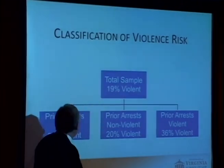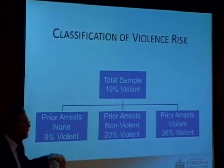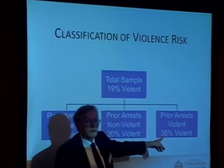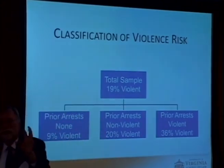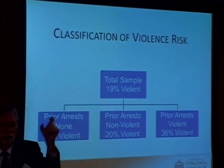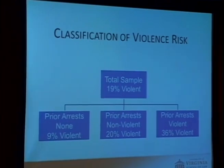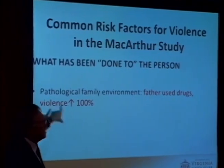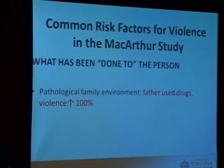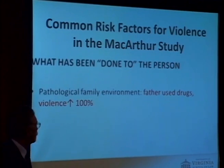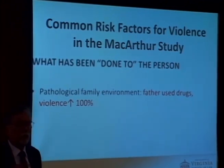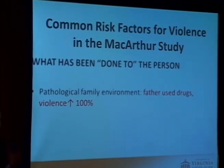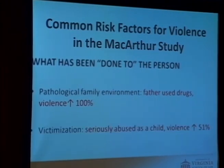Prior crime and violence: of the total sample, 19% were violent. Those with no prior arrests were 9% violent; those with prior non-violent arrests, 20% violent; and those with prior violent arrests, 36% violent. As almost every other study has found, the single best predictor of future violence is past violence — to no one's surprise. The fourth category is what has been done to the person. Pathological family environment: self-report that before age 15, your father used drugs to excess at home doubled your odds of being violent as an adult.